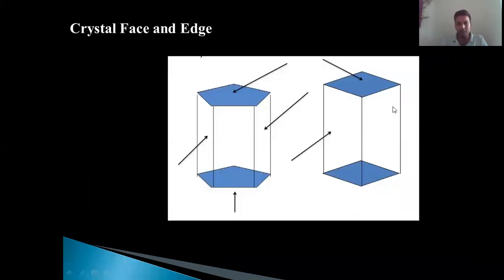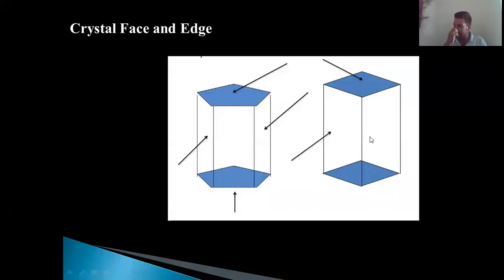Crystal face and edge. In the diagram, the blue portion of a crystal is nothing but the face of the crystal. A face is a planar feature of the crystal where all points lie on a single plane. The blue portion is a representative portion — there are many other faces also — and all these faces combined form the crystal.